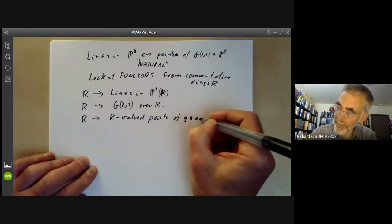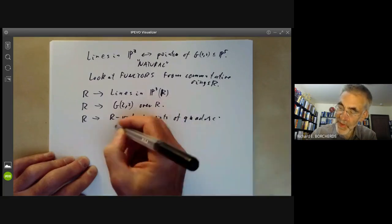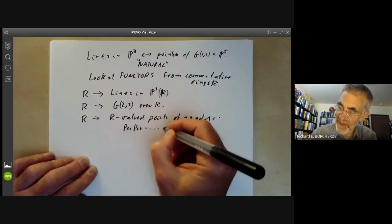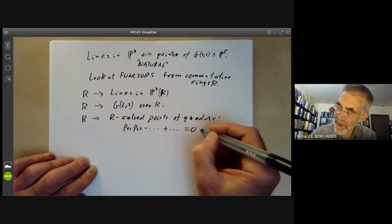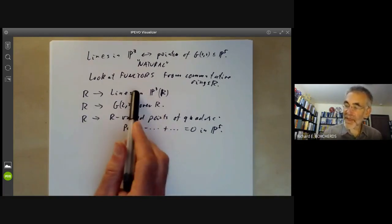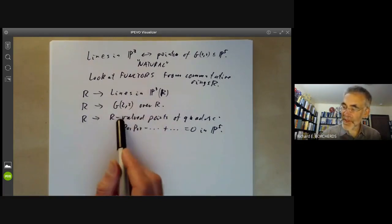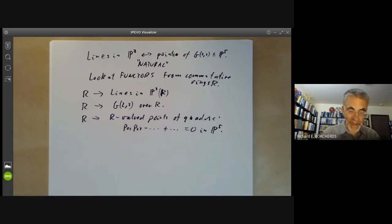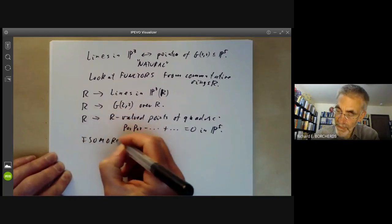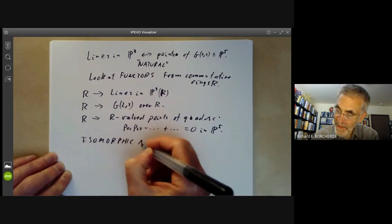Or we can take R to the R-valued points of, say, a quadric, given by the Plucker relation P01·P23 minus something, plus something, equals 0 in P5. And Grothendieck's way of saying that the lines in P3 correspond naturally to the R-valued points of this quadric says that these three are isomorphic as functors.